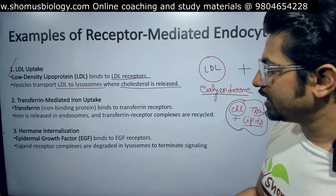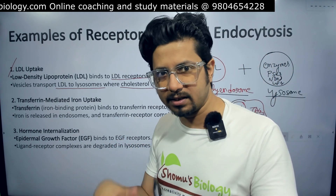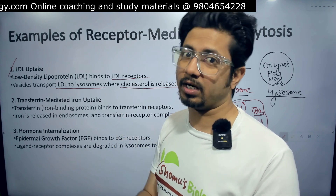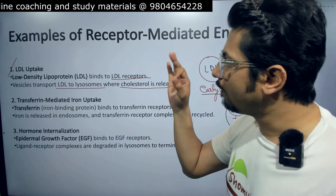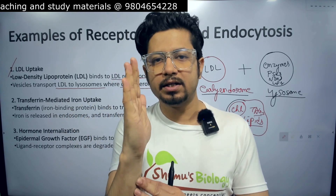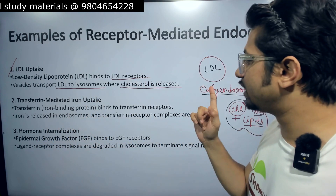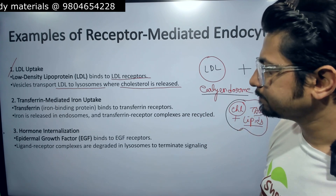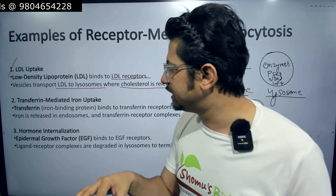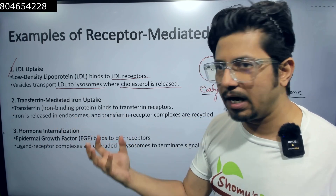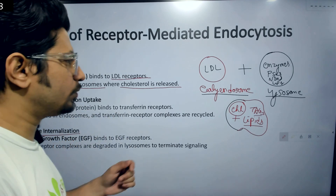Second example: transferrin-mediated iron uptake. Transferrin is an iron-binding protein that binds iron, which is necessary for the central structure of our hemoglobin. Iron is released in endosomes and the transferrin-receptor complexes are recycled via receptor-mediated endocytosis. On the cell surface, the transferrin receptor is present; iron binds to it, gets internalized, and after internalization, fusion with the lysosome causes the release of iron. This is how our cells take up iron.